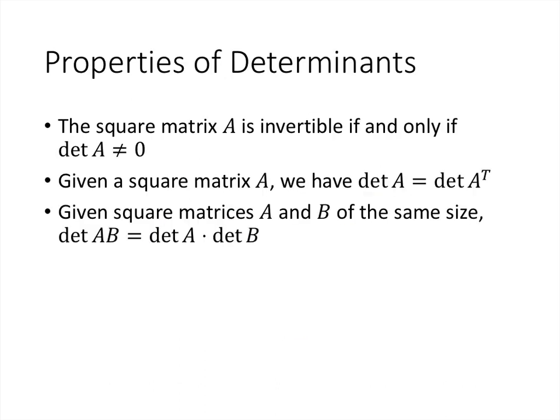Determinants have many nice properties, though we won't prove them here since the proofs are tedious. Key properties include: first, matrix A is invertible if and only if its determinant is not zero. Second, the determinant of a matrix equals the determinant of its transpose, since rows and columns are treated symmetrically. Third — and very importantly — the determinant of a product of two square matrices A and B equals the product of their determinants. The determinant of a product is the product of the determinants, and we'll see that one again soon.